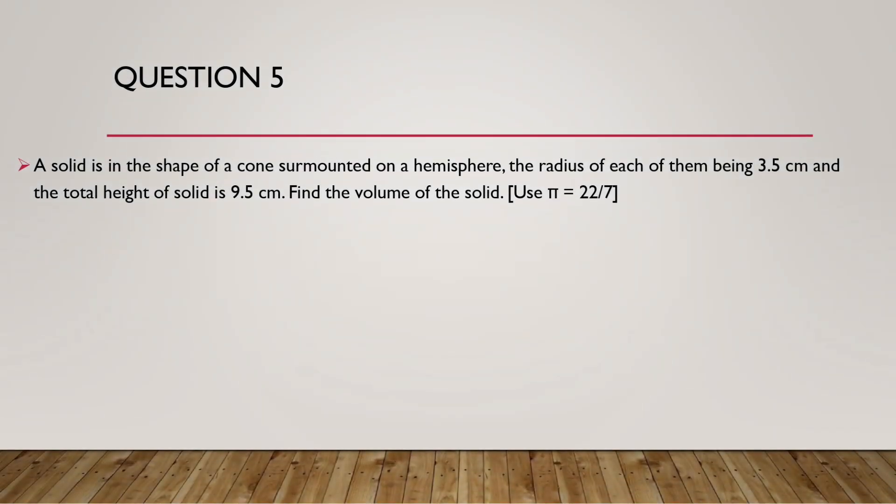Question 5. A solid is in the shape of a cone surmounted on a hemisphere. The radius of each of them being 3.5 cm and total height of solid is 9.5 cm. Find the volume of the solid. Use pi equals 22 by 7.